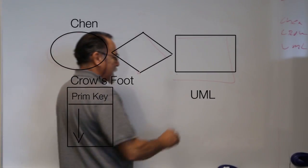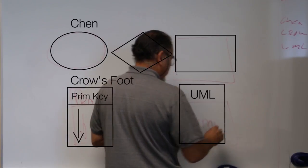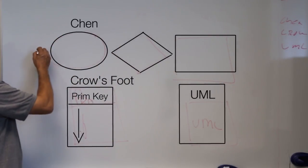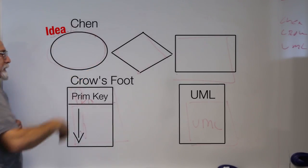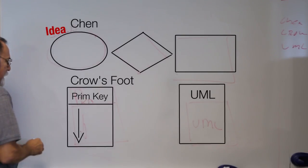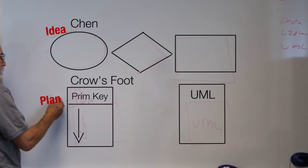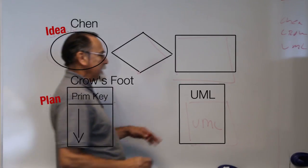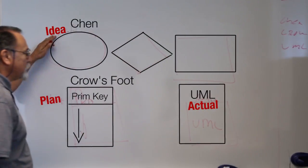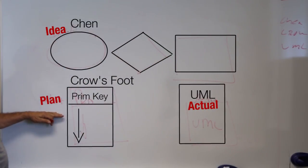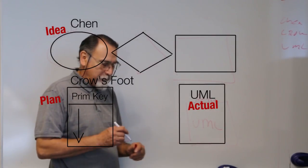The Chen diagram is more of the idea-type thing — this is where you draft out what you want to do. The Crowfoot is more of what it's going to look like when it's done, and that would be the actual product. So you go from the idea of what I want to do, to this is how I'm going to do it, to this is what it's going to look like when I'm through — the final product.